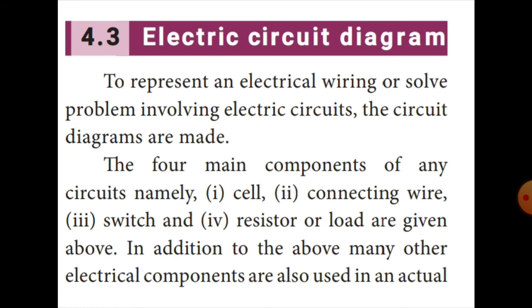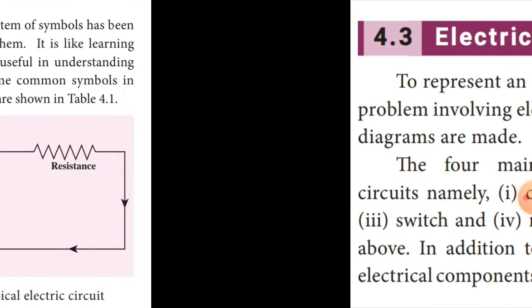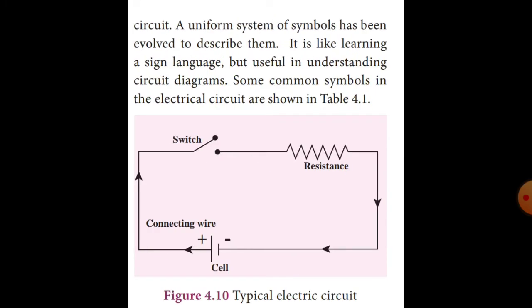Now let us see the four main instruments. In addition to that, many other electrical components are also used in an actual circuit. A uniform system of symbols has been evolved to describe them. Some common symbols used in electrical circuits are shown in the figure, and it will be easy to understand the circuit diagram using this sign language.